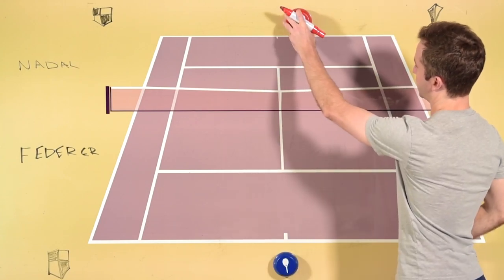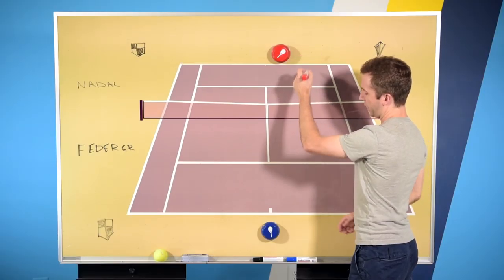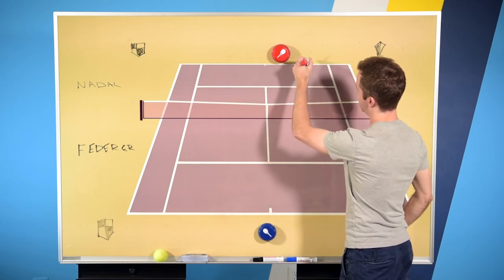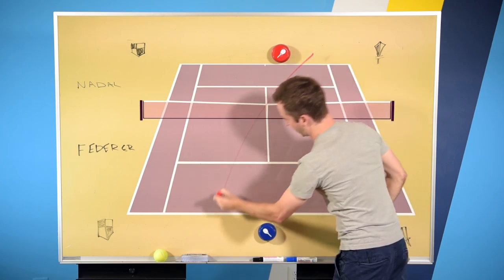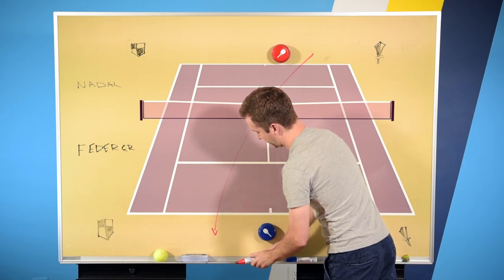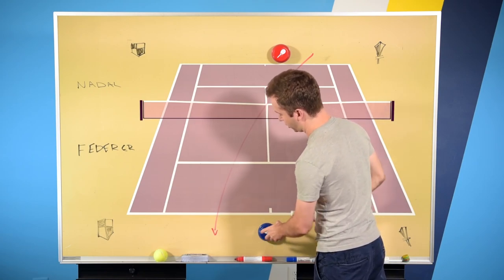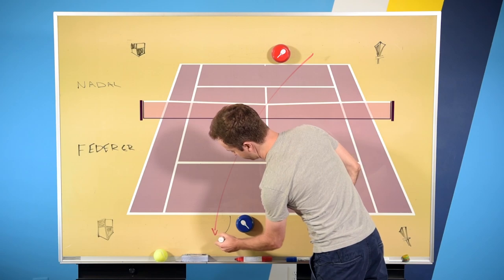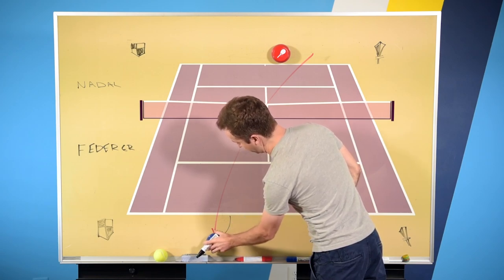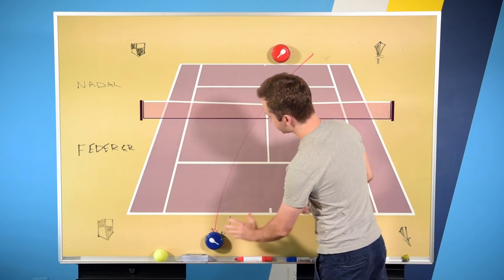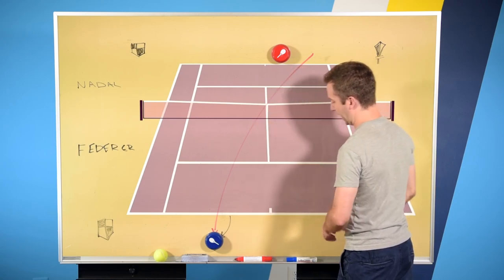So the battering ram is pretty straightforward. Nadal is going to go forehands cross court at Fed's backhand. And the first forehand is going to be through the court like that. And the goal is to push Roger back off of the baseline. So get him back there. Roger's going to hit that ball back cross court.